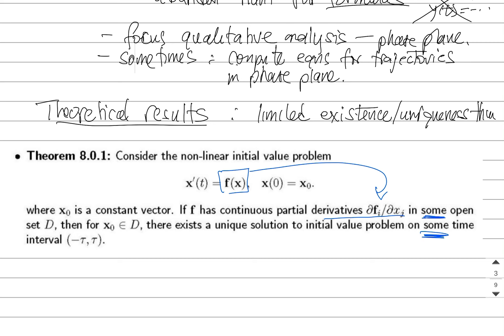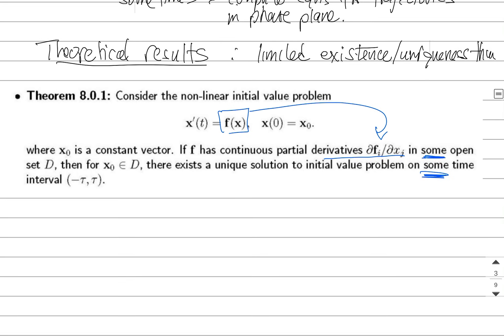then there exists a unique solution to this initial value problem on some time interval. Well, that's not the greatest. It's not so great. Because we don't know what that time interval is. We don't know how long it is. Because the best that this tells us,